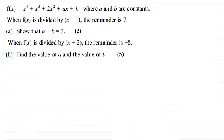Hi there. Now, for this question, we're given that the function f(x) equals x to the power 4 plus x cubed plus 2x squared plus ax plus b, where a and b are constants. And when f(x) is divided by x minus 1, the remainder is 7.